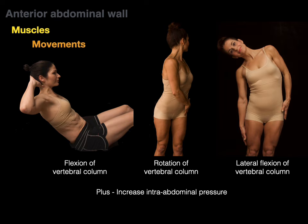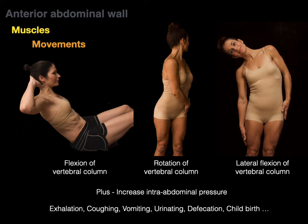When the abdominal muscles contract together, they increase intra-abdominal pressure. This is involved in forced exhalation — put your hand on your tummy and breathe out hard, and you'll notice those muscles contract. Coughing, urinating, defecating, and giving birth all require an increase of intra-abdominal pressure, reducing volume inside which increases pressure, pushing the diaphragm up.